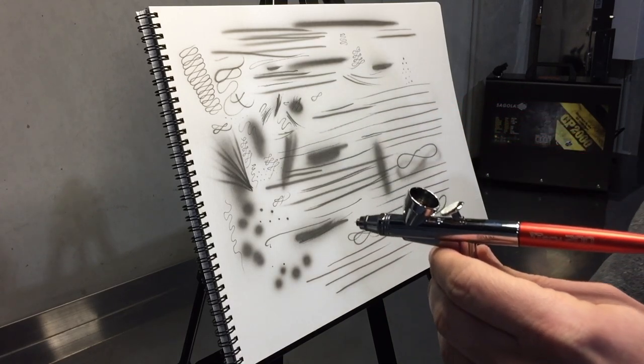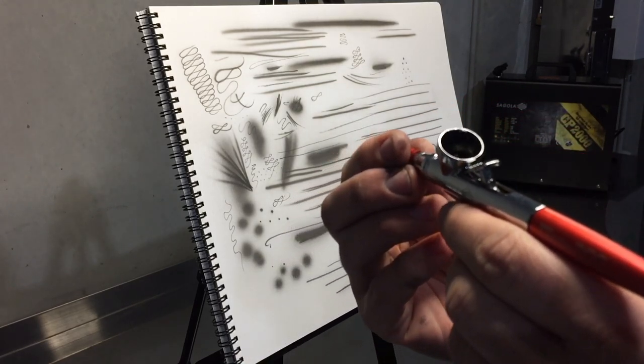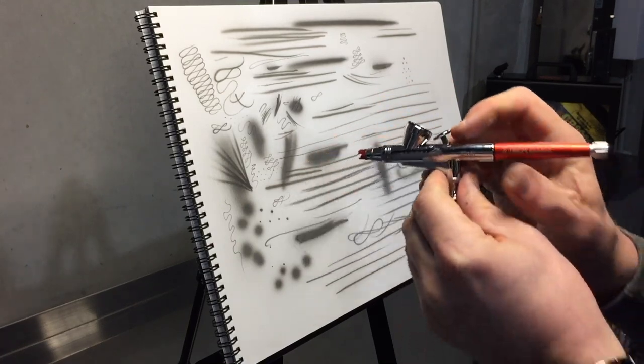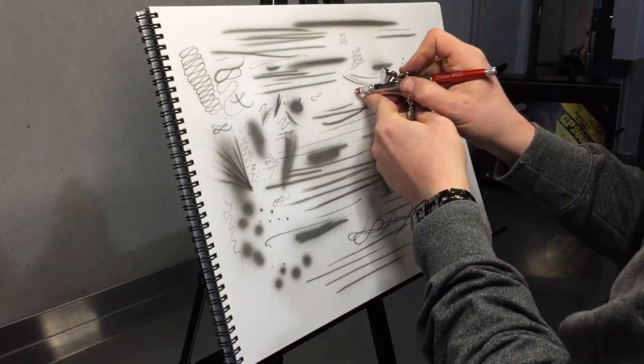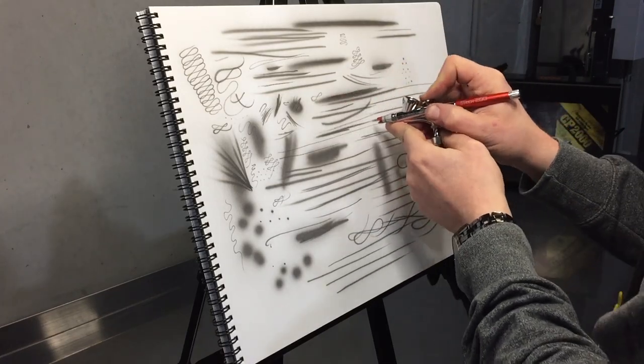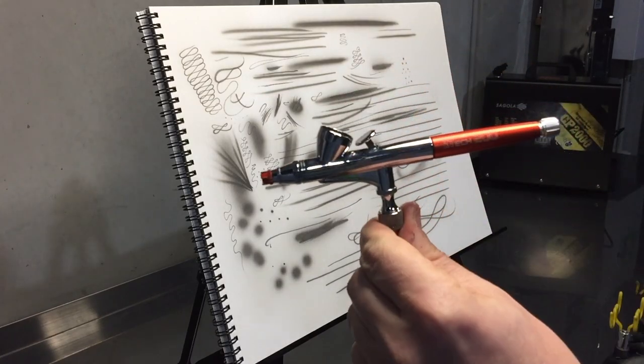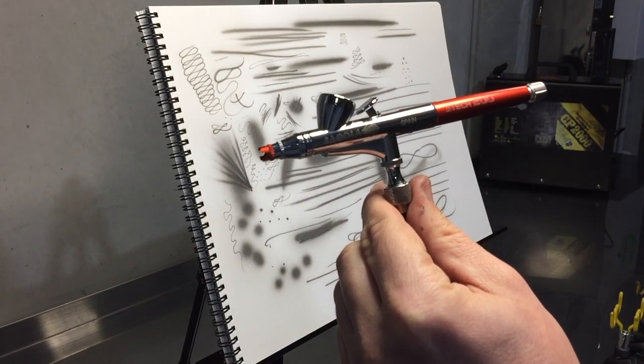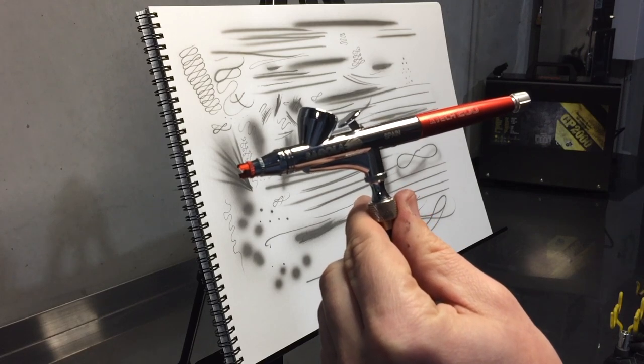It paints without the air cap, which is always a good thing. You don't need to go and buy another air cap. It also paints reasonably well with the crown cap on. That's a good little test for the X-Tech 200 with the 0.2mm needle.